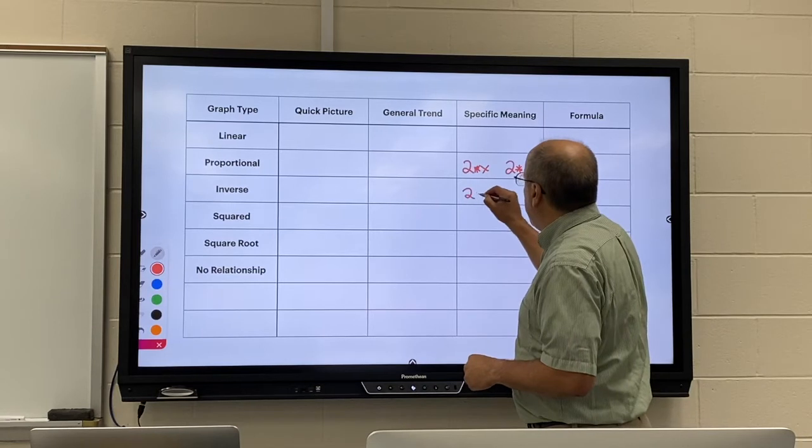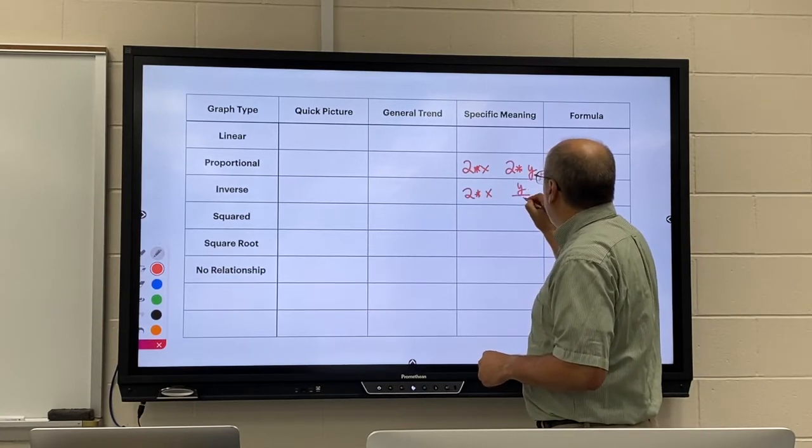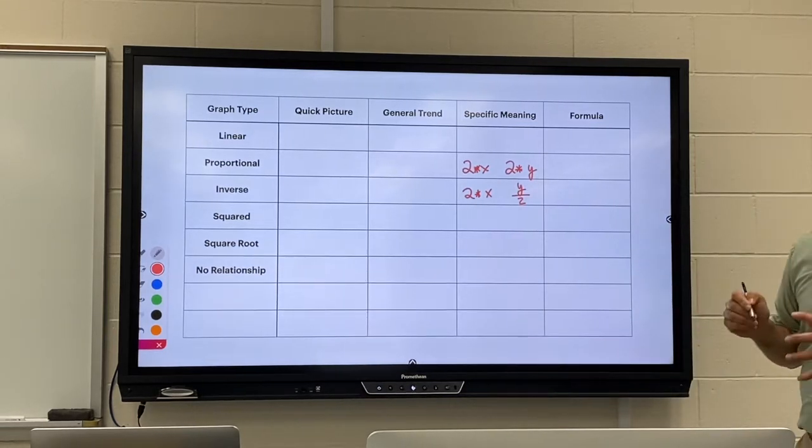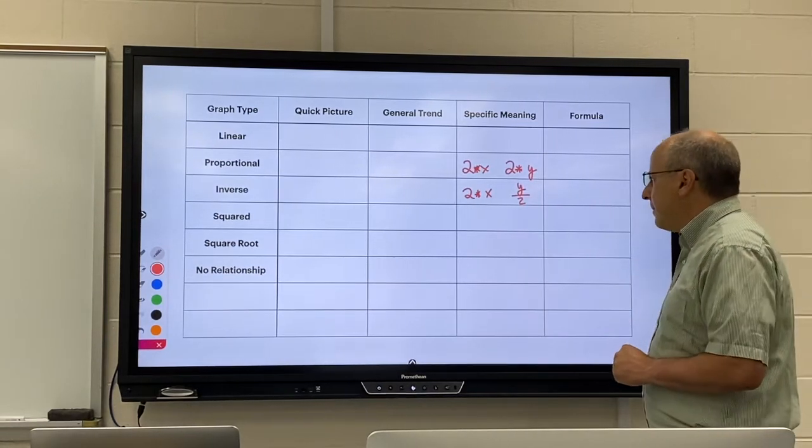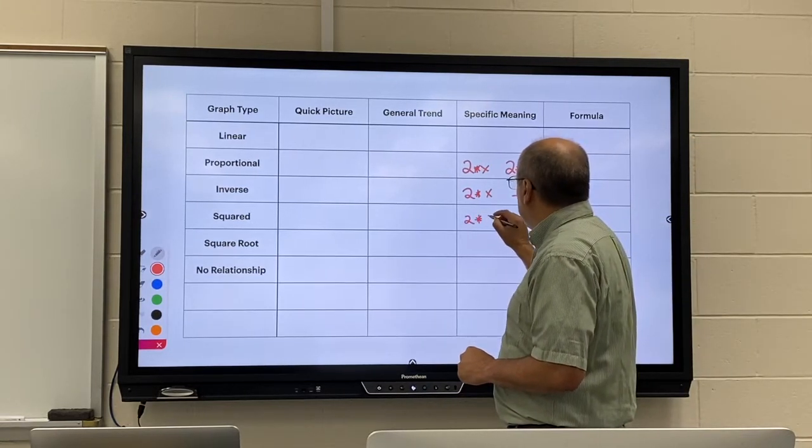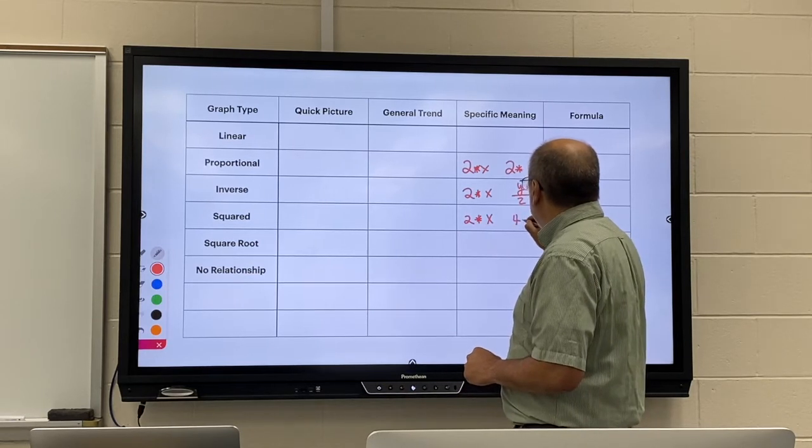For an inverse graph, if you double the X, your Y is cut in half. That's what happens with an inverse graph. A square graph means if you double the X, you'll get four times the Y.